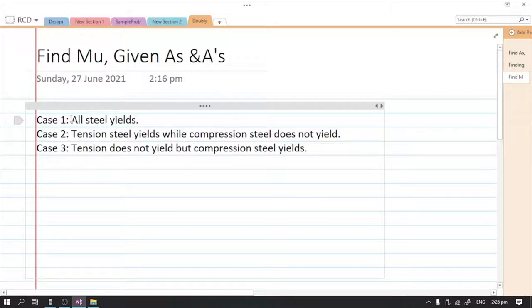Our assumption would be all steel yields, and for case number two, tension steel yields while compression steel does not yield, and for the last case, tension does not yield but compression steel yields.